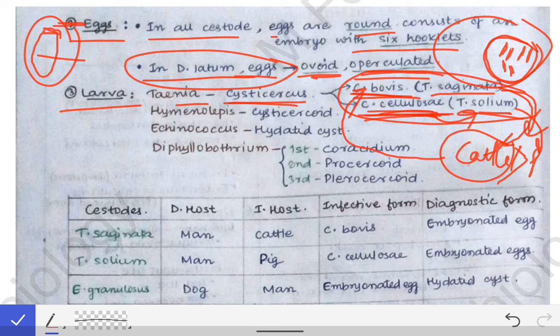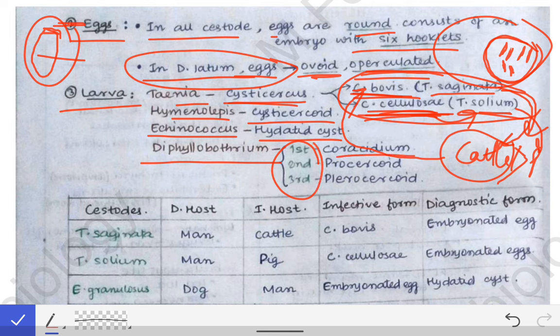For Hymenolepis nana, the larval stage is called a cysticercoid. In Echinococcus granulosus, the larval stage is a hydatid cyst. In Diphyllobothrium latum, there are three larval stages: the first is the coracidium, then the procercoid, and then the plerocercoid. These larval names must be committed to memory through multiple revisions.